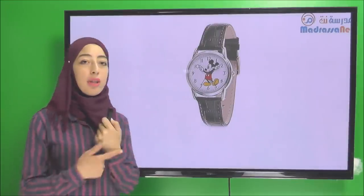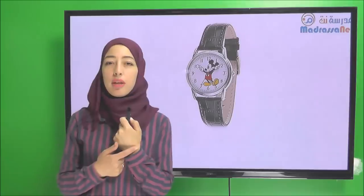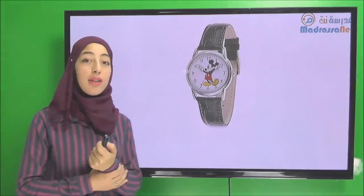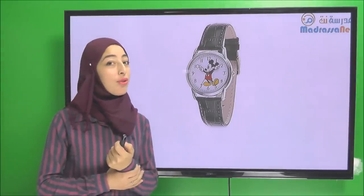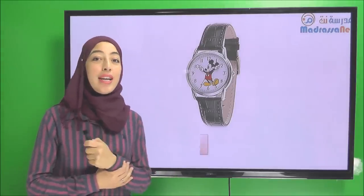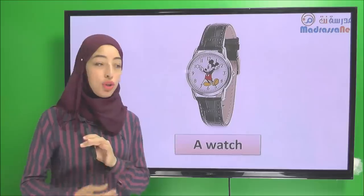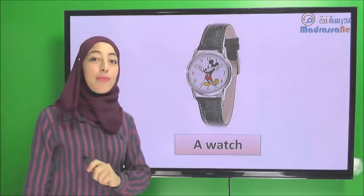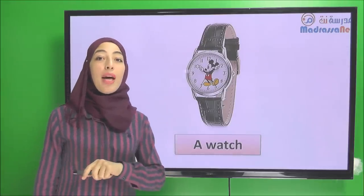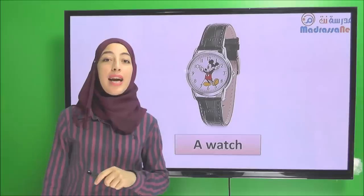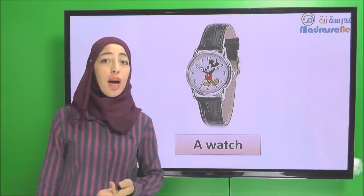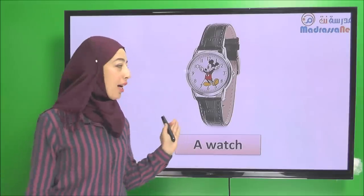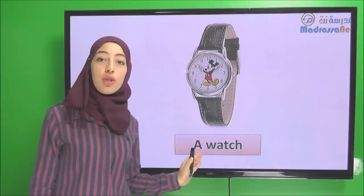A clock. What about this one? A wristwatch — is it a clock? No. It's a watch. This is a watch. What do we call a wall clock? A clock. A wristwatch? A watch.